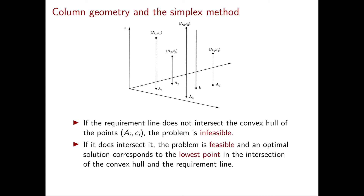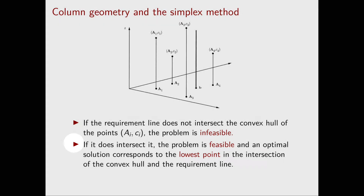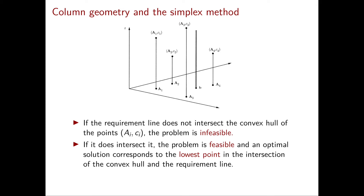We can now easily visualize when our problem is feasible or infeasible. If the requirement line does not intersect the convex hull of the points ai,ci, then there is no way of obtaining b as a convex combination of the ai's, so the problem is infeasible. On the other hand, if the requirement line intersects the convex hull of the points ai,ci, then the problem is feasible and an optimal solution will correspond to the lowest point in the intersection.